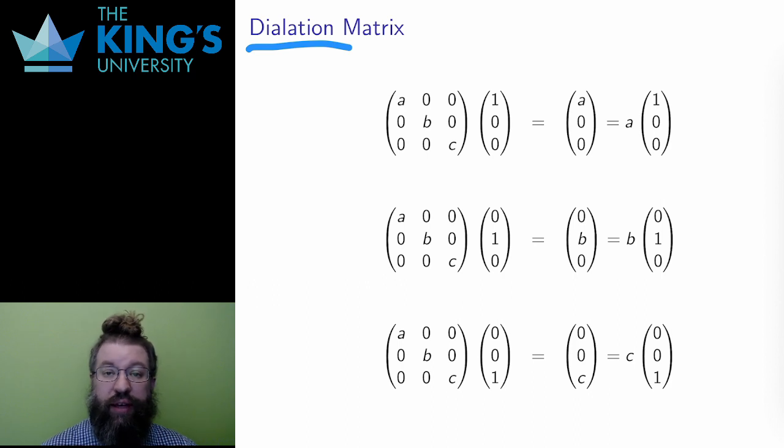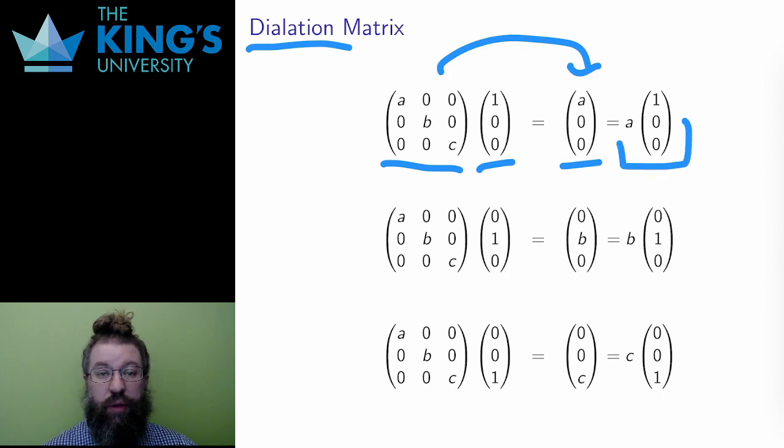If this matrix acts on (1, 0, 0), the output is (A, 0, 0), which is A times (1, 0, 0). This is the definition of an eigenvector. It is sent to a multiple of itself.